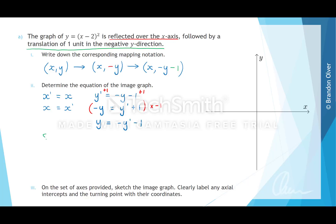Next, we use this information and substitute it into our original graph, which was y equals x minus 2 all squared. So wherever there is a y value, we replace it with this expression. We find that negative y-dash minus 1 is equal to the right-hand side, and wherever there is an x, we replace that with x-dash. So it becomes x-dash minus 2 all squared.